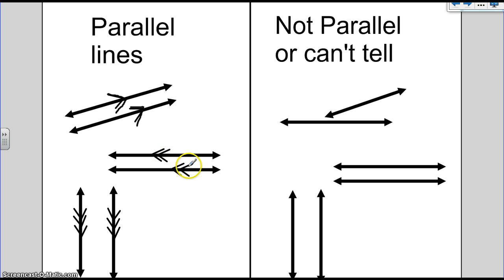If you see two lines and I mean two arrows and two arrows, then these two lines are parallel. These two lines are parallel.